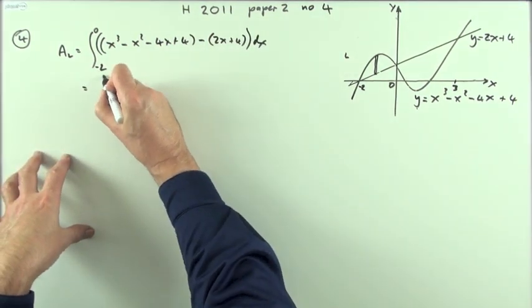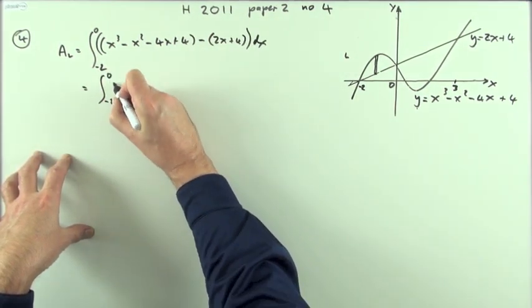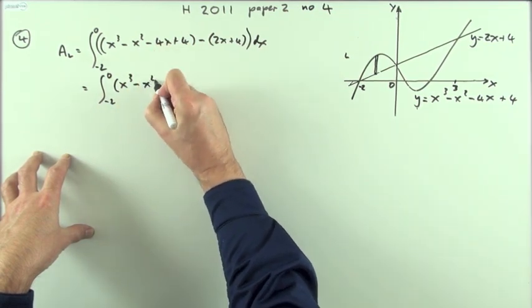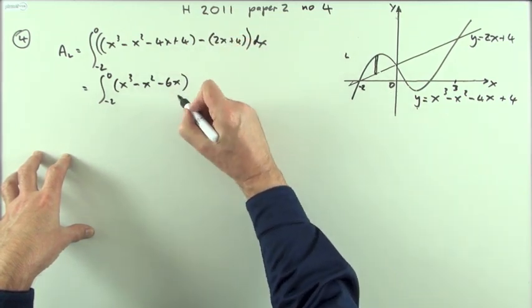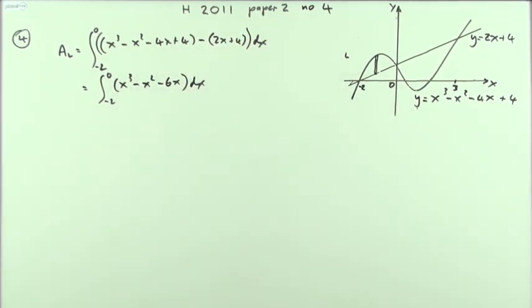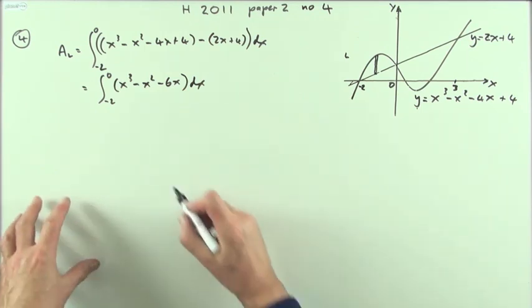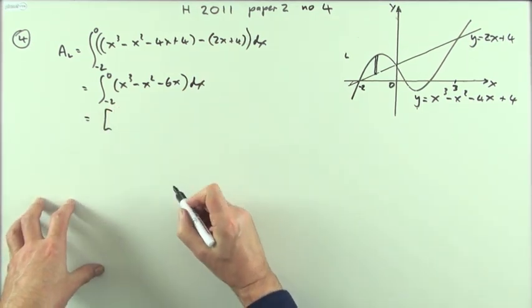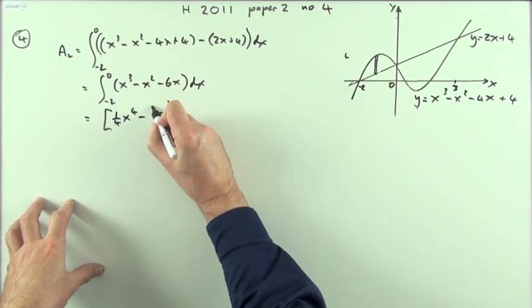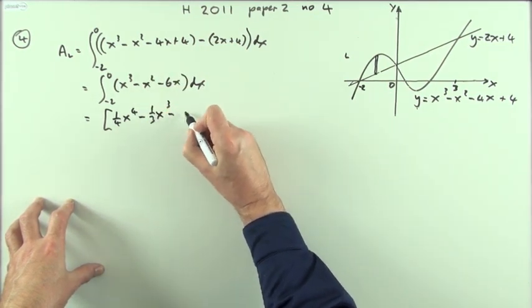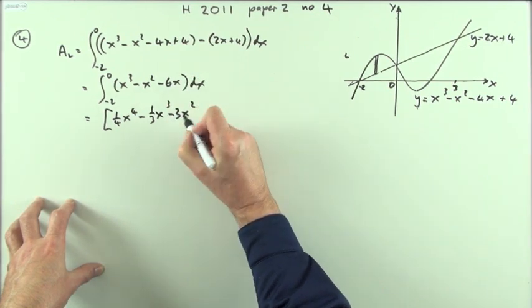For the area on the left, I'm going to add them starting at negative two and finishing at zero, with the top given by x³ - x² - 4x + 4, take away the bottom which is 2x + 4. That gives the height of the strip, and there's the width. Now tidy that up: from negative two to zero of x³ - x² - 6x, and the constant disappears. So I've only got three terms. Integrate it: add one to the power and divide by that power.